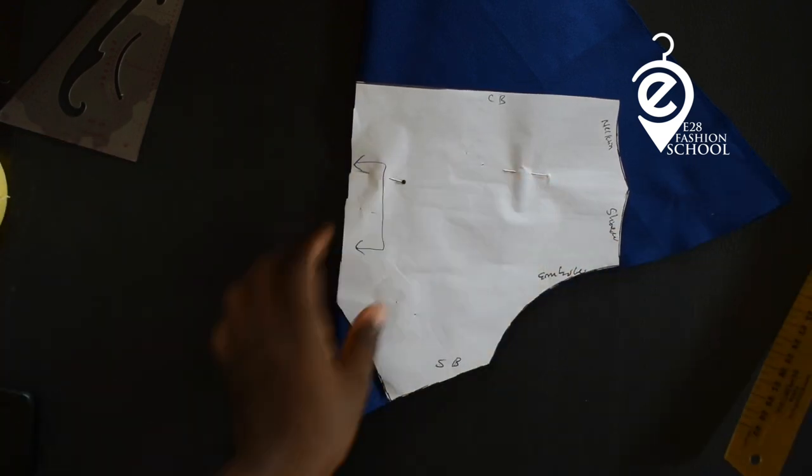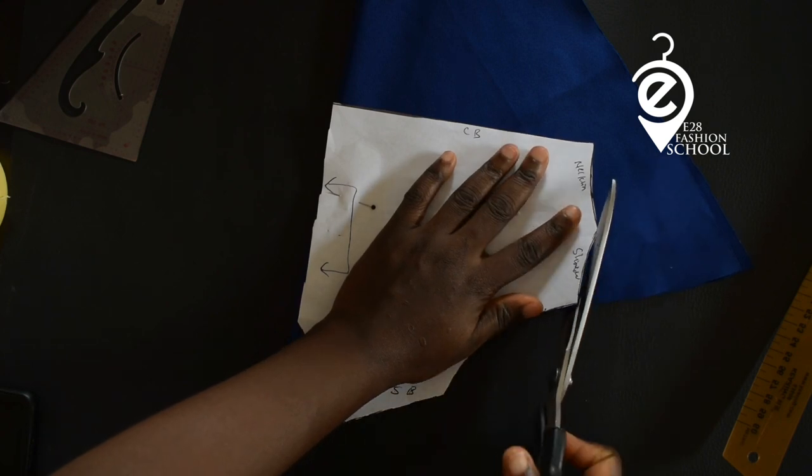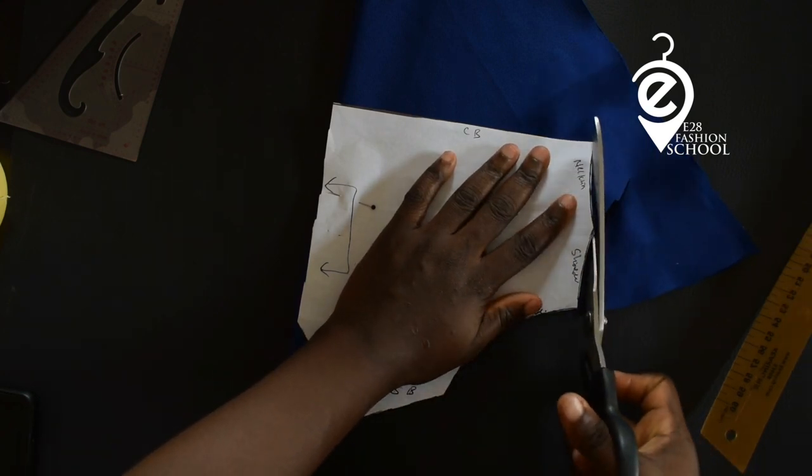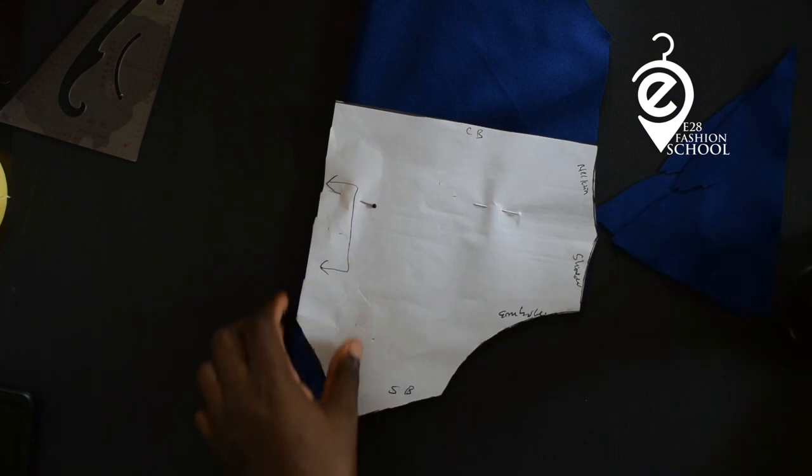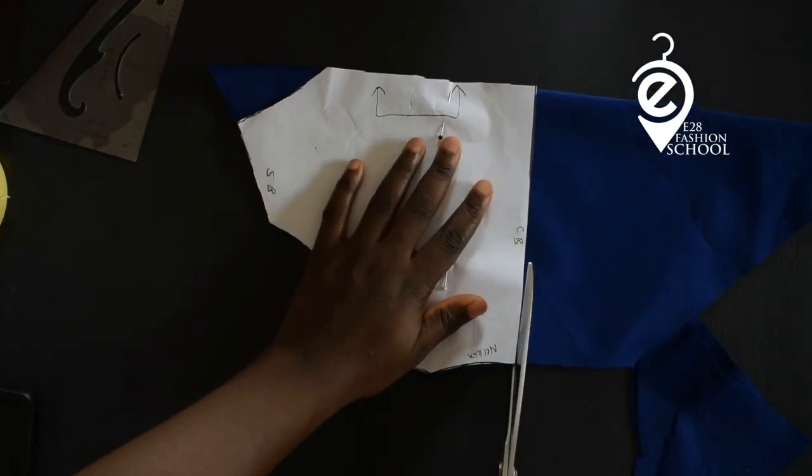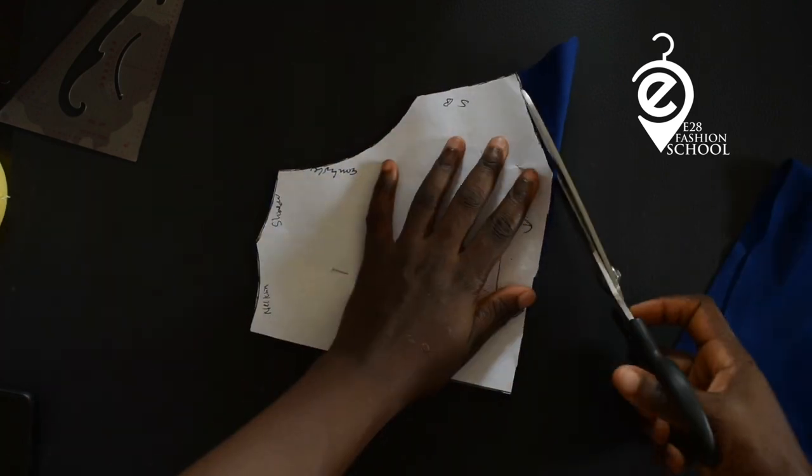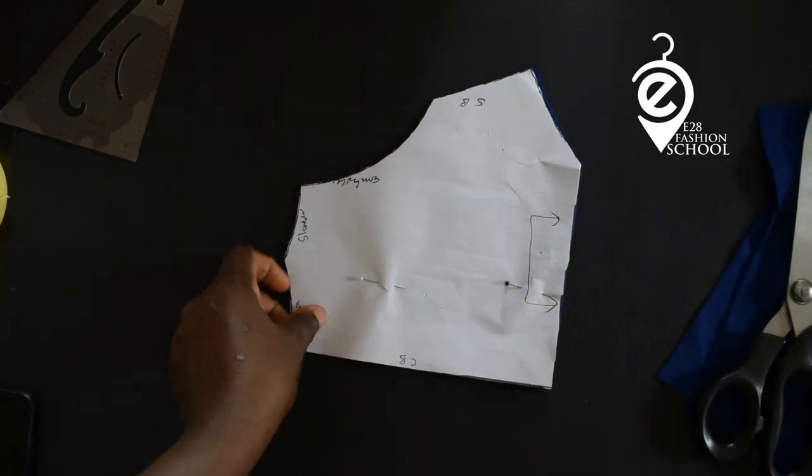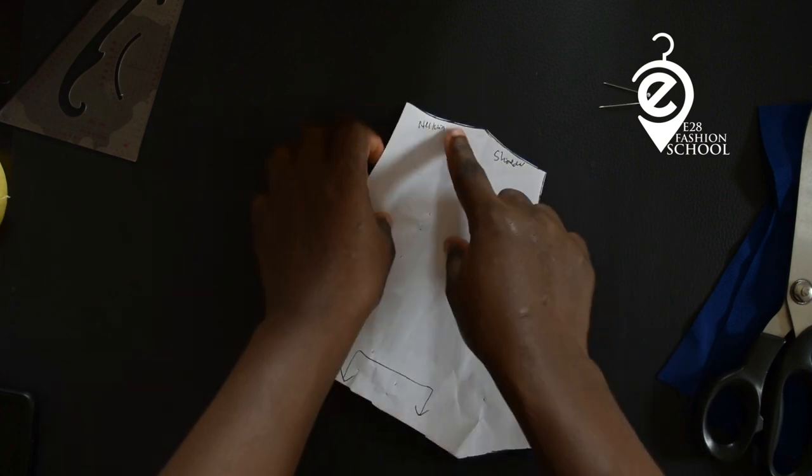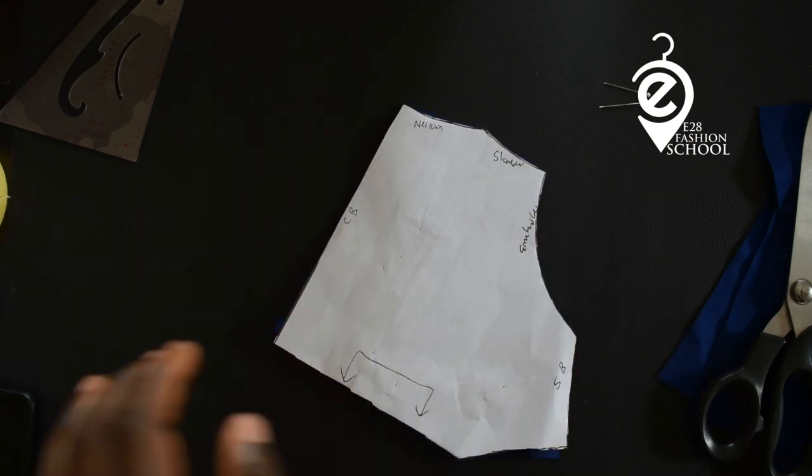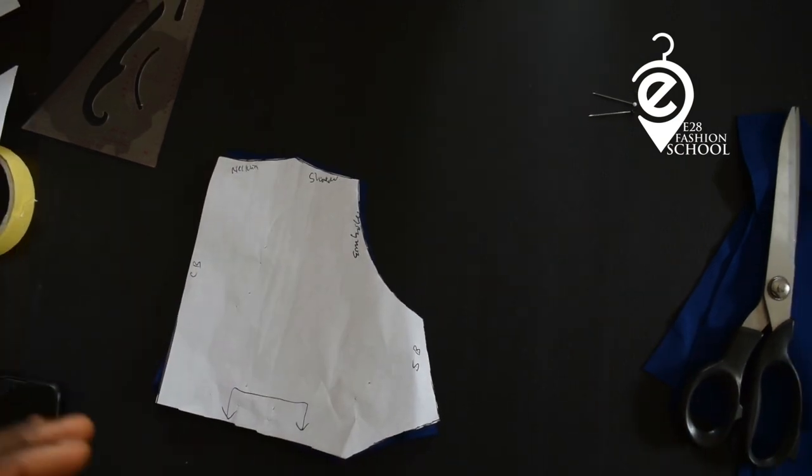Then you cut it out. Remember this has no seam allowance. You can decide to add your seam allowance if you wish. You shouldn't do it without a seam allowance. Cut, cut, cut. Don't remove the pattern yet, just make sure you know where the center back is at the neckline—very important.